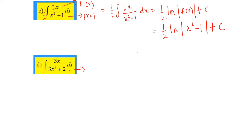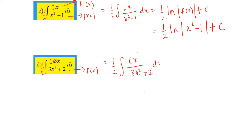For part D, I'll give you an idea: on the denominator side, 3x² plus 2 is your f(x). When you differentiate 3x² plus 2 with respect to x, you get 6x. But the numerator here is 3x, so you have to multiply by 2 to get 6x, and then divide by 2 — multiply by half. So it will be one half times the integration of 6x over 3x² plus 2 dx. This one is homework.